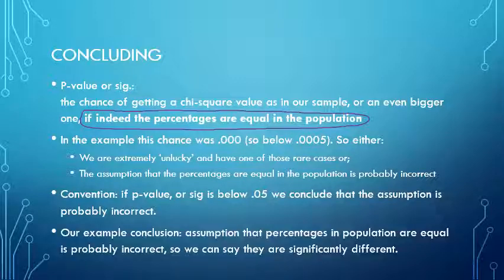In this case, our example conclusion would be that the assumption that percentages in the population are equal is probably incorrect. We can therefore state that they are significantly different.